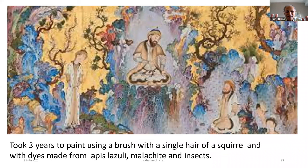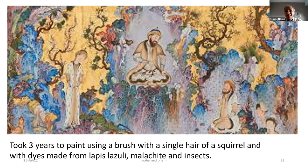This particular miniature painting is so intricate that art historians say it would have taken the painter Sultan Muhammad three years to complete it, using a paintbrush made of a single squirrel hair. Some consider this to be like the Mona Lisa of Islamic art — that detailed — and it has an interesting story around it.